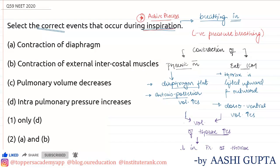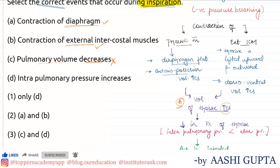Now let's find the correct answer. The first option is contraction of diaphragm — yes, this is correct, as phrenic muscles contract and the diaphragm becomes flat. The second option is contraction of external intercostal muscles — this is also correct. The third option is pulmonary volume decreases — this is wrong, as thoracic volume actually increases. The fourth option is intrapulmonary pressure increases — this is also incorrect, since when volume increases, pressure decreases.